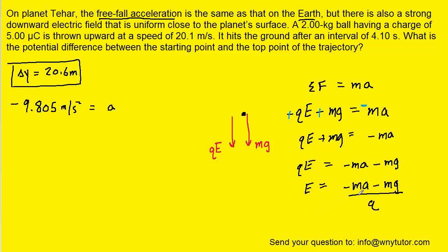We can now plug in the known values for the mass, the acceleration a that we calculated earlier, g, as well as the charge. Notice the charge is given in microcoulombs. So we'll have to multiply that by 10 to the minus 6 to put it in the standard unit of coulombs.